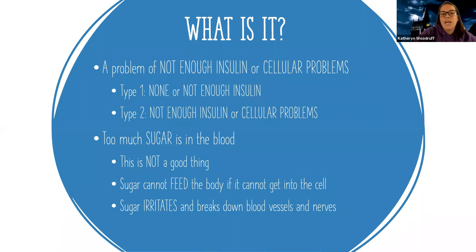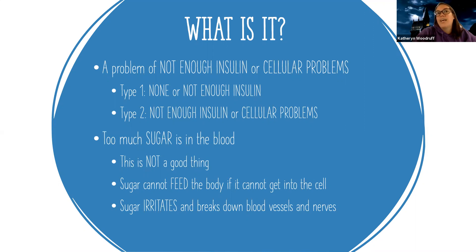For type two, they can have the same problem where their pancreas gets overworked and stops making as much insulin as it once did. There can also be cellular problems.